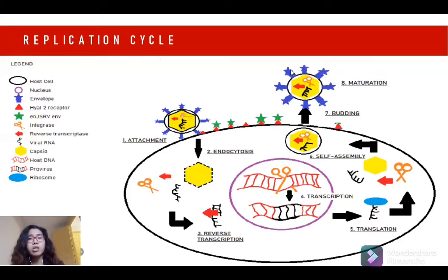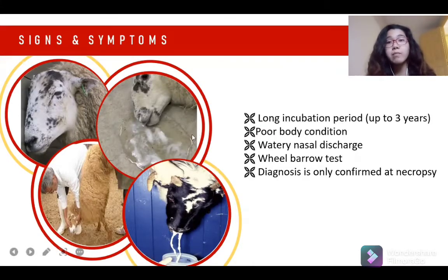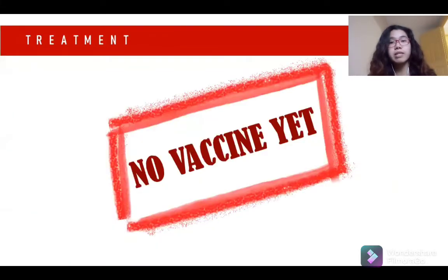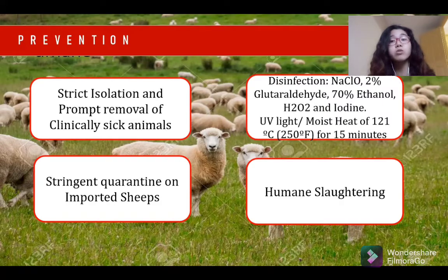Ovine pulmonary adenocarcinoma has a long incubation period ranging from 1 to 3 years, which is why this virus is often seen in adult sheep. An infected animal exhibits dyspnea and watery nasal discharge, which is assessed with the wheelbarrow test. Diagnosing OPA in sheep can only be confirmed with necropsy. Unfortunately, there is no vaccine or treatment yet, but preventive measures such as strict isolation, quarantine of imported sheep, scheduled disinfection of enclosures, and humane slaughtering can reduce exposure to the virus.